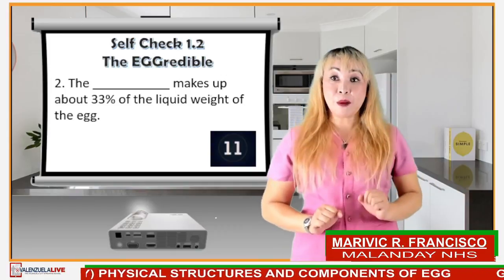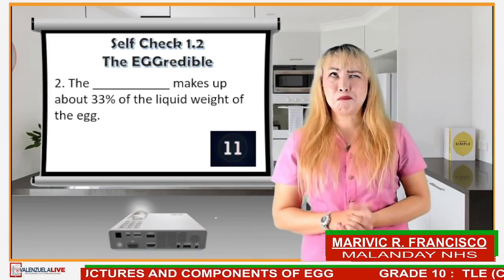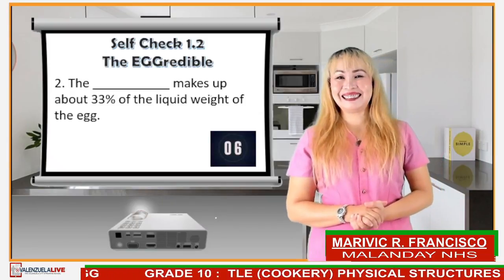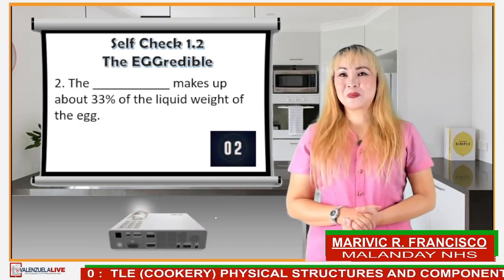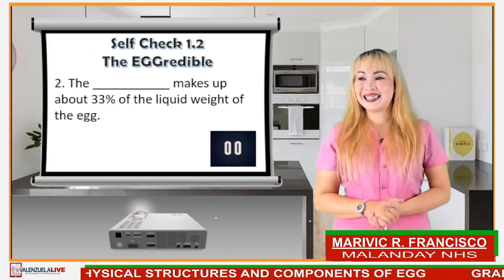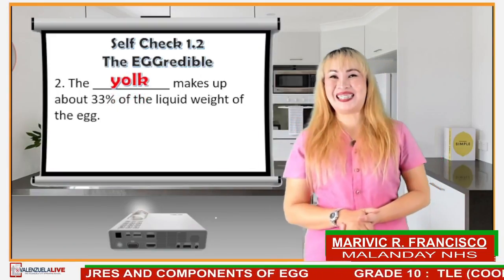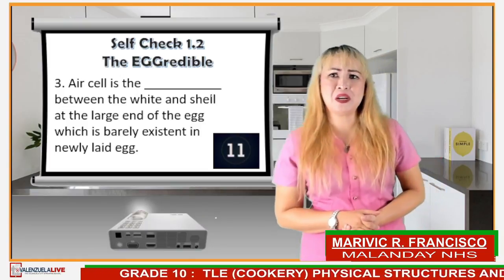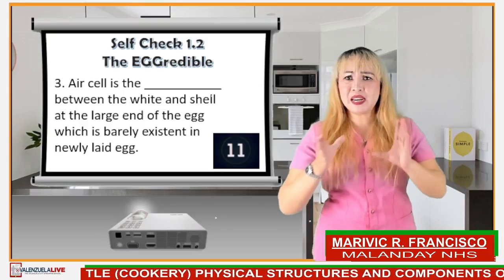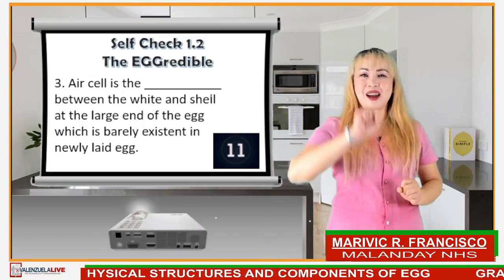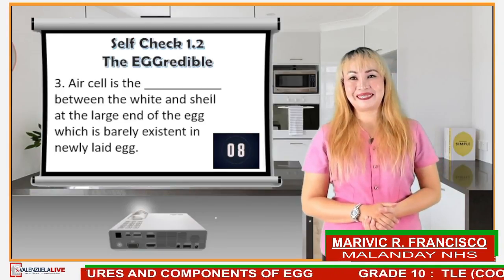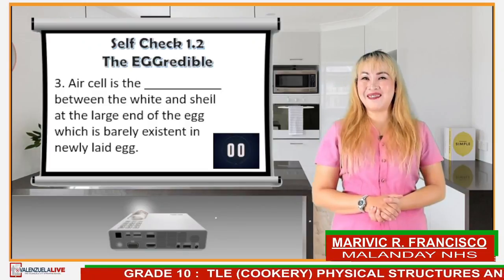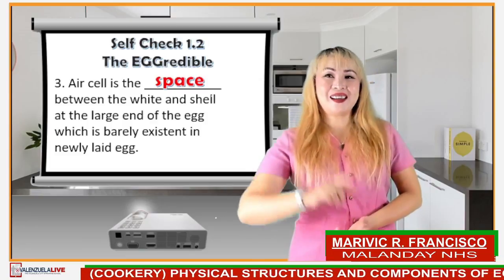Number 2 — the blank makes up about 33% of the liquid weight of the egg. The answer is the yolk. Number 3 — air cell is the blank between the white and shell at the large end of the egg, which is barely existent in the newly laid egg. The answer is: air cell is the space.